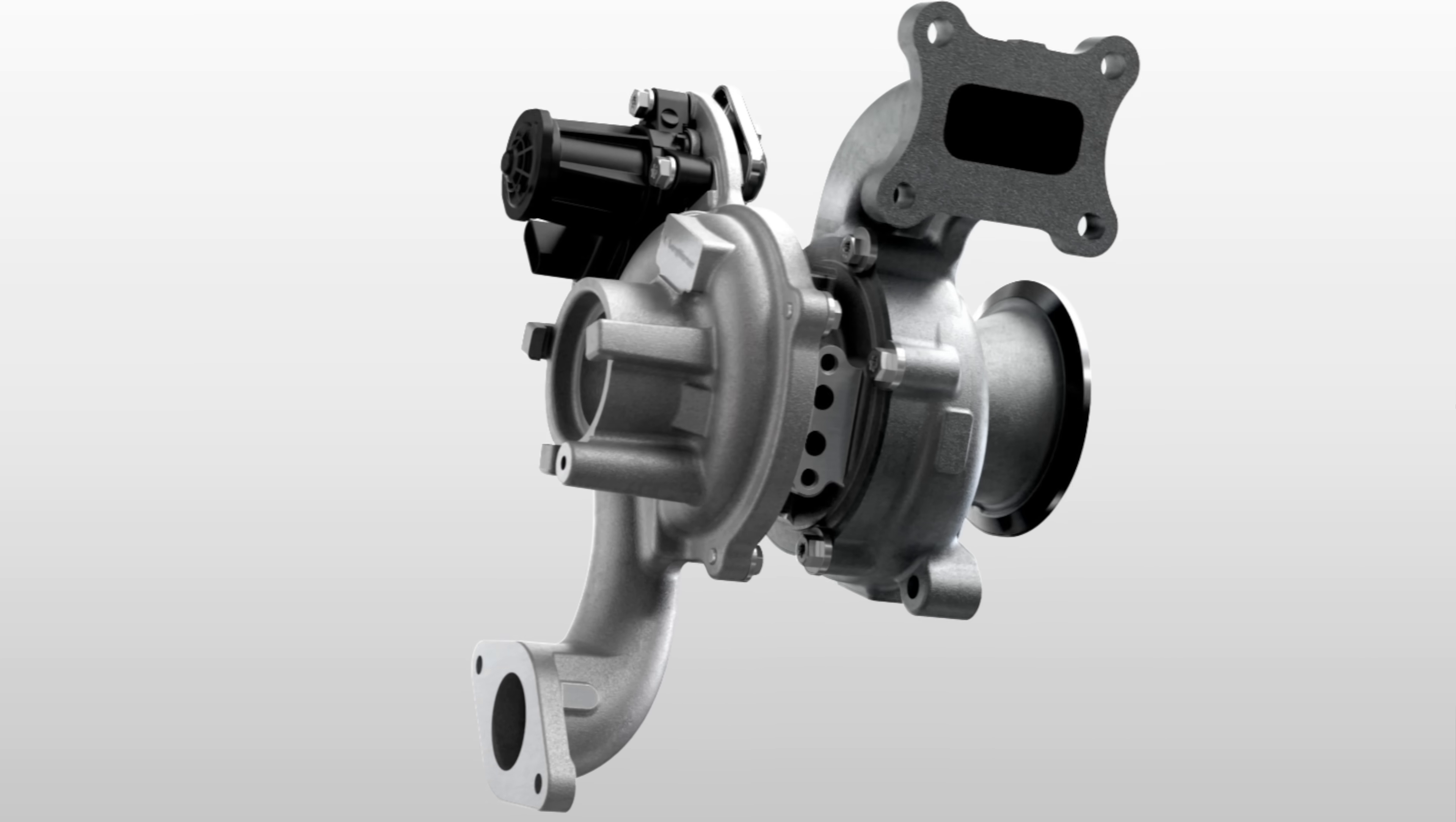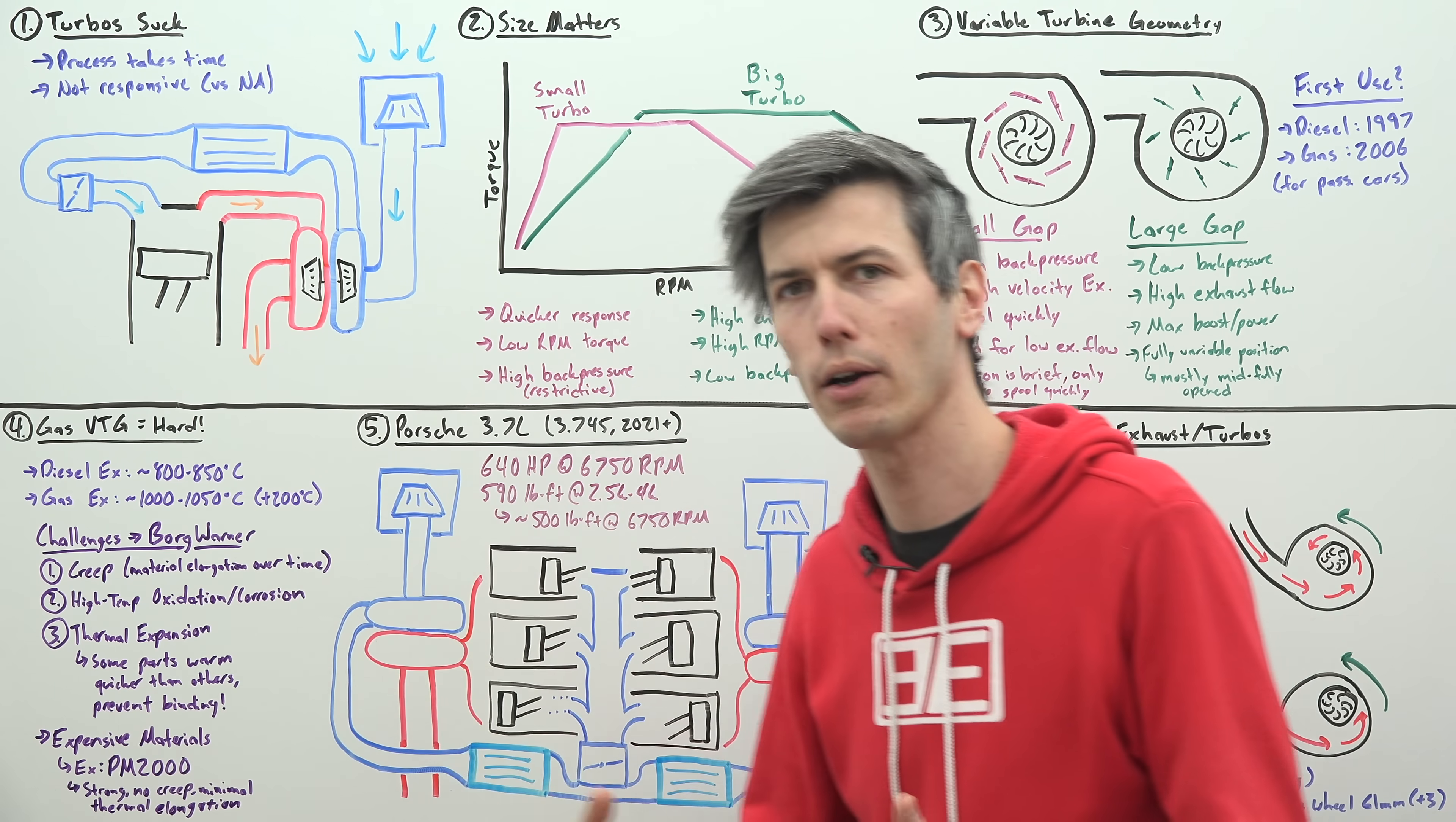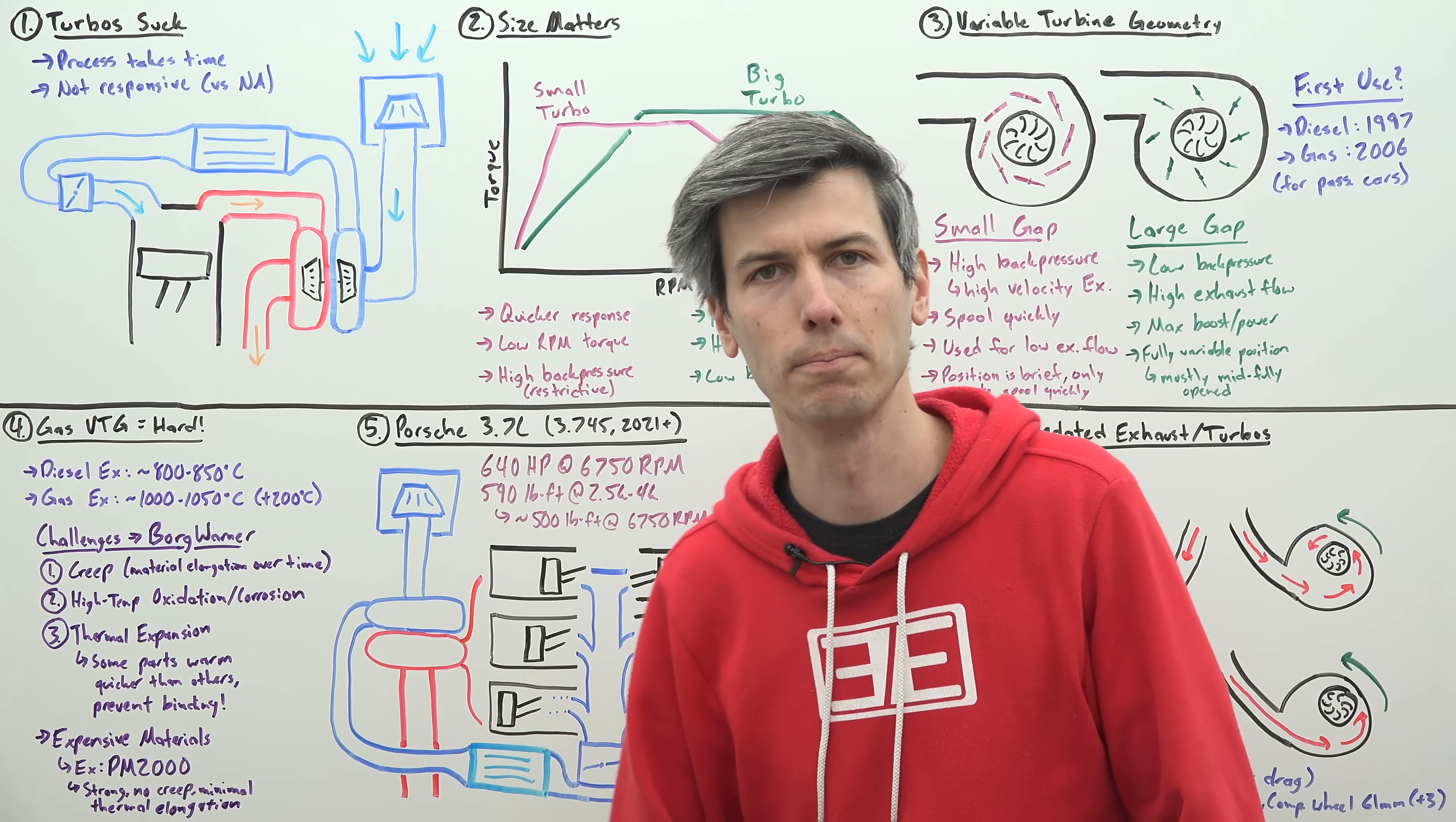One of the things that makes all of this very challenging is that it's difficult to find materials that satisfy all of these requirements. I was asking BorgWarner engineers about unique materials and they told me about PM2000. This is an iron alloy that's very difficult to obtain. Go ahead and Google it and try to buy some. It's difficult to acquire, very rare, and very expensive, but it has really good properties. It's super strong, doesn't have creep, and has minimal thermal elongation, so it's perfectly suited for this application.